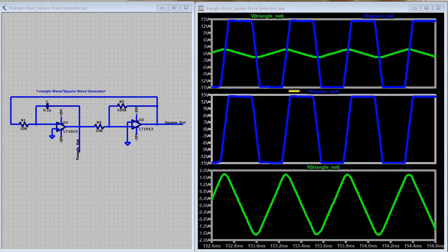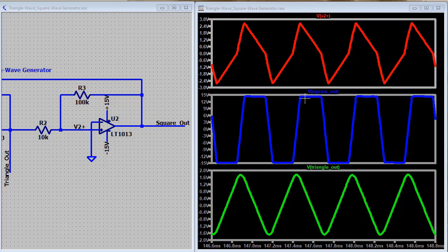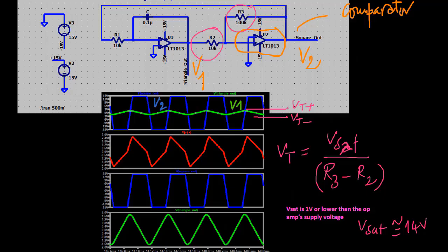Let's say the op-amp saturates in the positive direction. It will remain in that saturated state until the voltage at the non-inverting input drops below 0, at which time V2 will be driven to negative saturation. The threshold voltage is given by this expression.